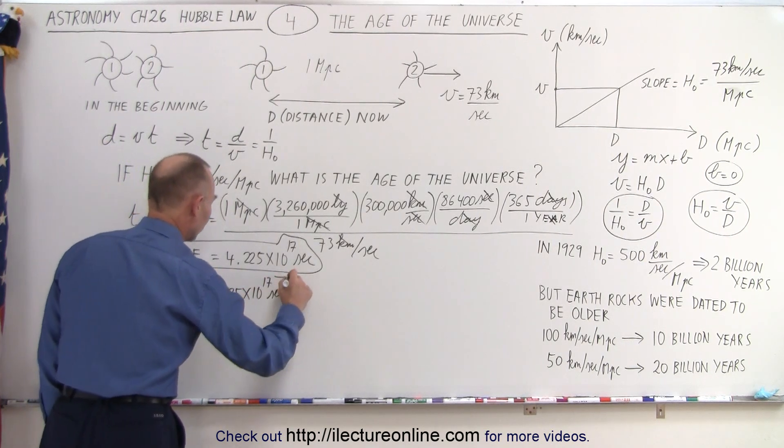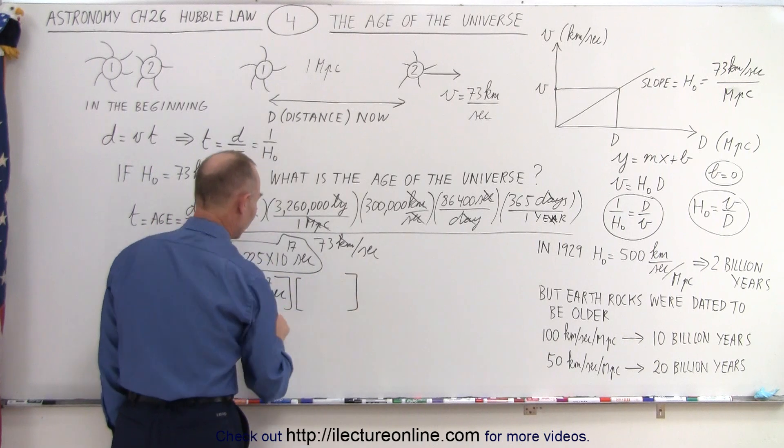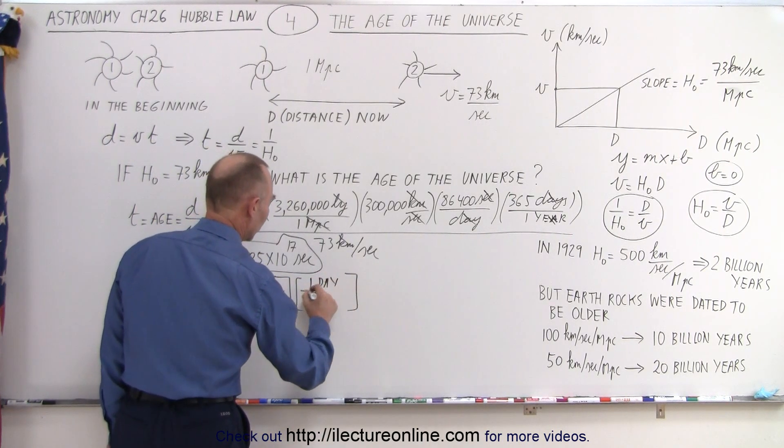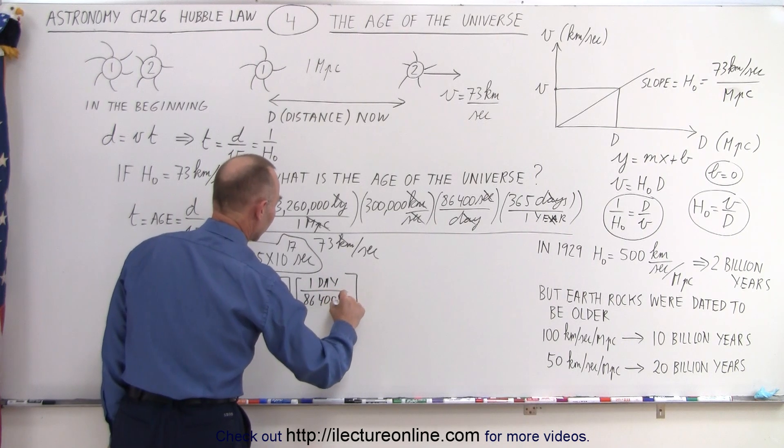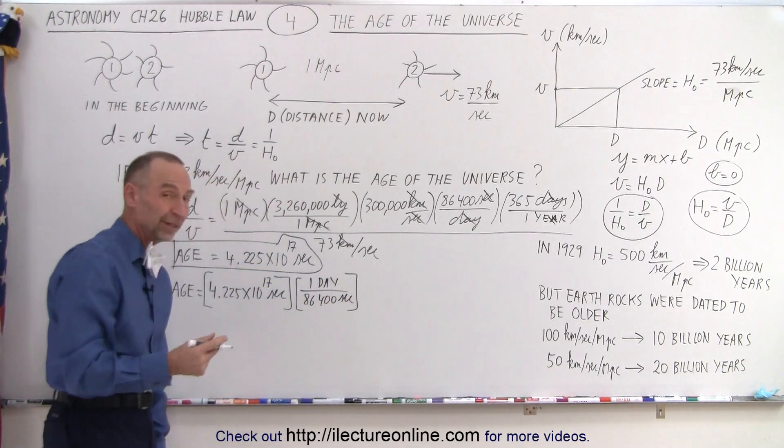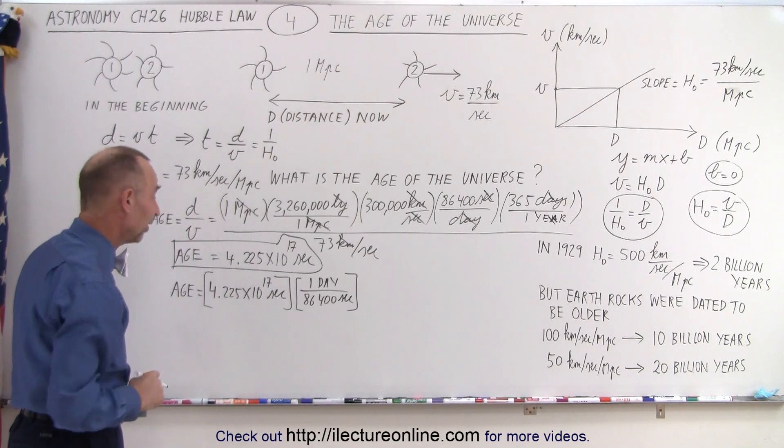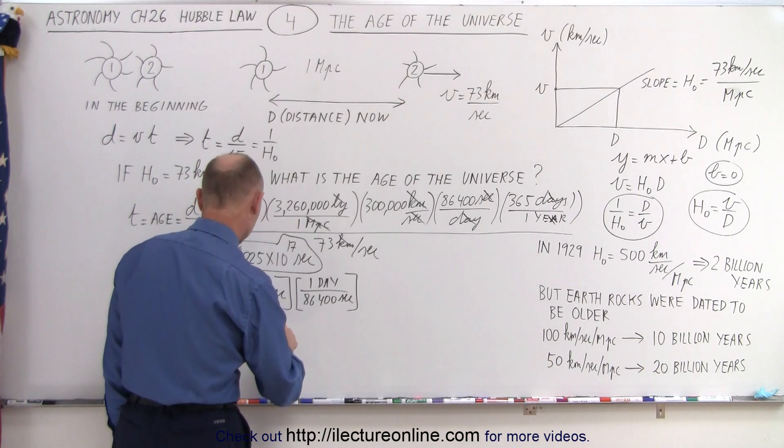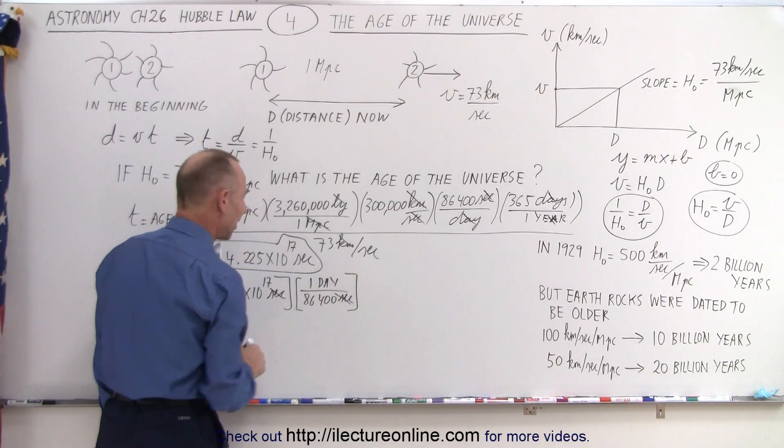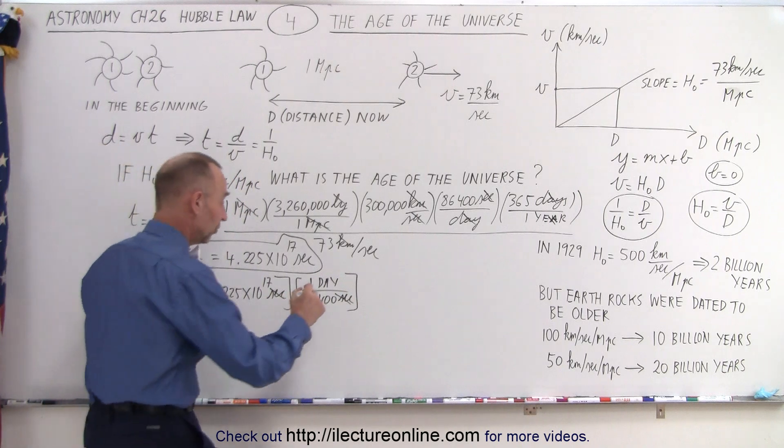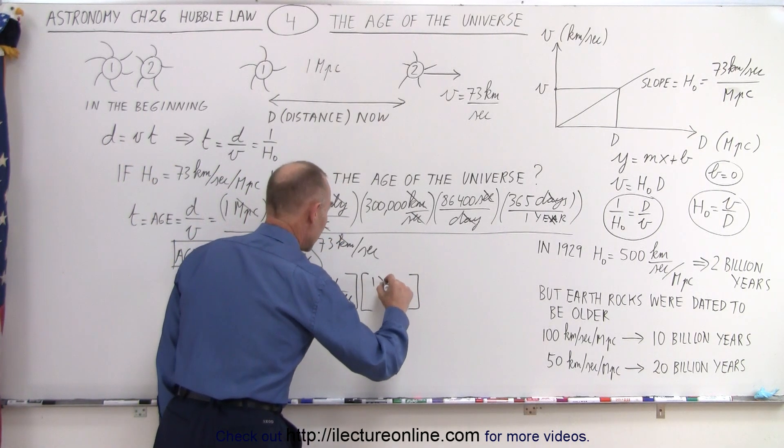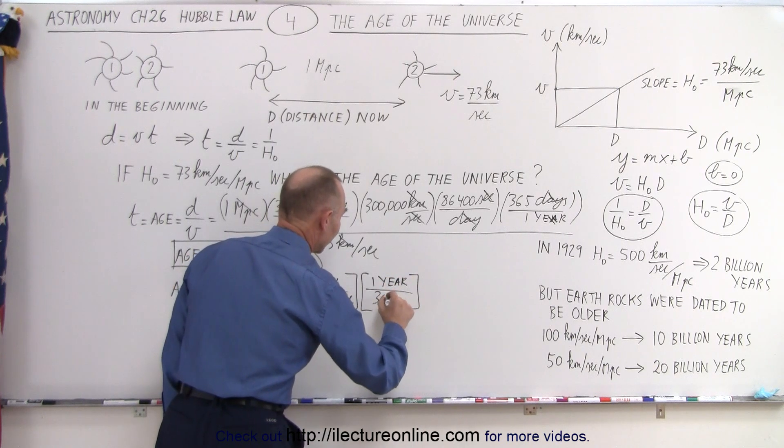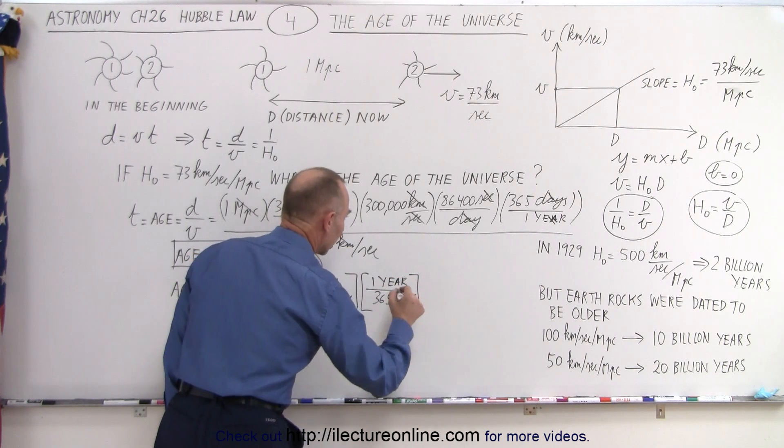First, we have to go from seconds to days. So we have one day, which is 86,400 seconds. That number is simply 24, that's 24 hours, times 3,600 seconds per hour. So now seconds and seconds cancel out. Now we have days. Now let's convert that to years. So we have one year divided by 365 days.